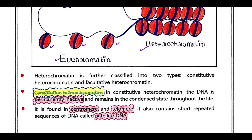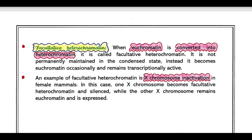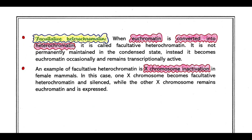It also contains short repeated sequences of DNA which are called satellite DNA. Next is facultative heterochromatin. When euchromatin is converted into heterochromatin it is called facultative heterochromatin. It is not permanently maintained in the condensed state; instead it becomes euchromatin occasionally and remains transcriptionally active. So sometimes it is in the euchromatin state and sometimes in the heterochromatin state.